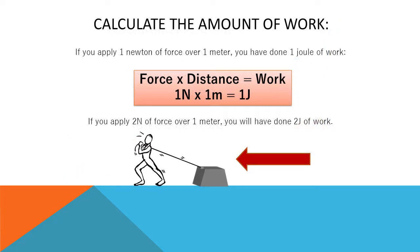You can calculate how much work is done by multiplying a force by the distance that the force is applied. Force times distance equals work. If you apply one newton of force over one meter, you have done one joule of work. Force times distance equals work. One newton times one meter equals one joule.